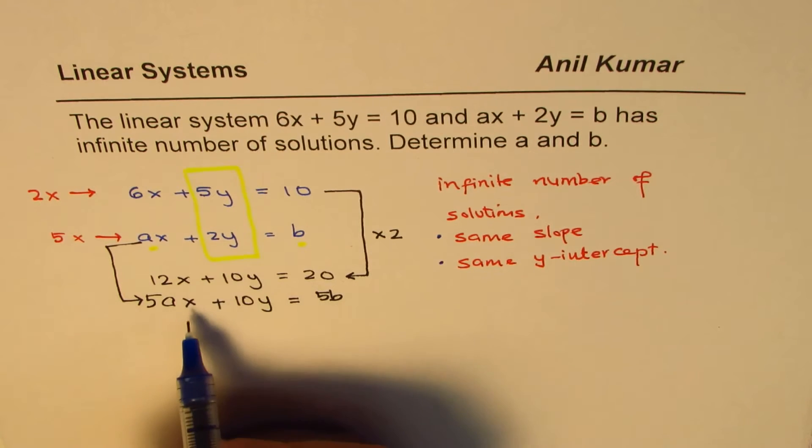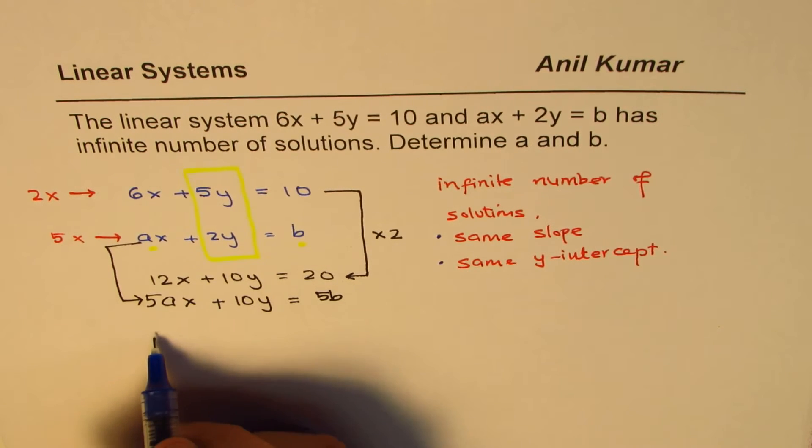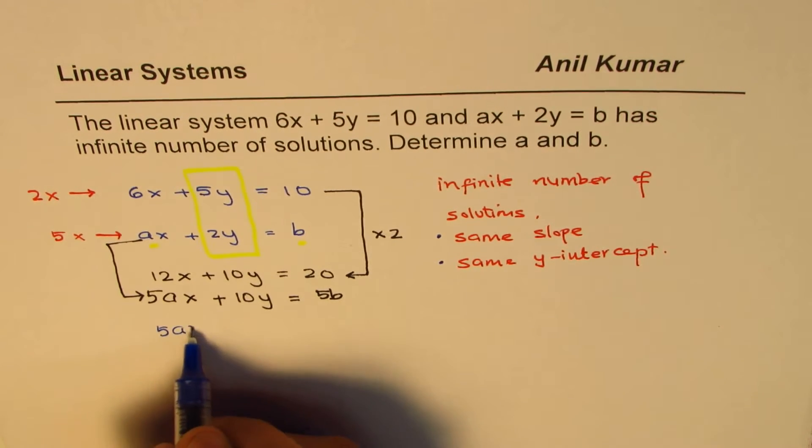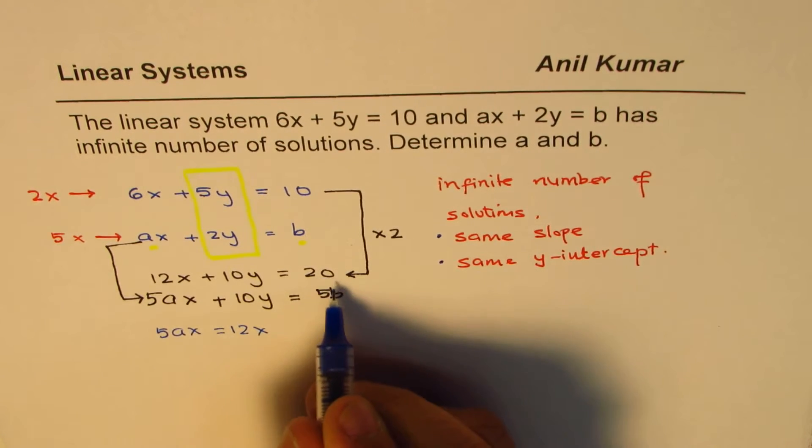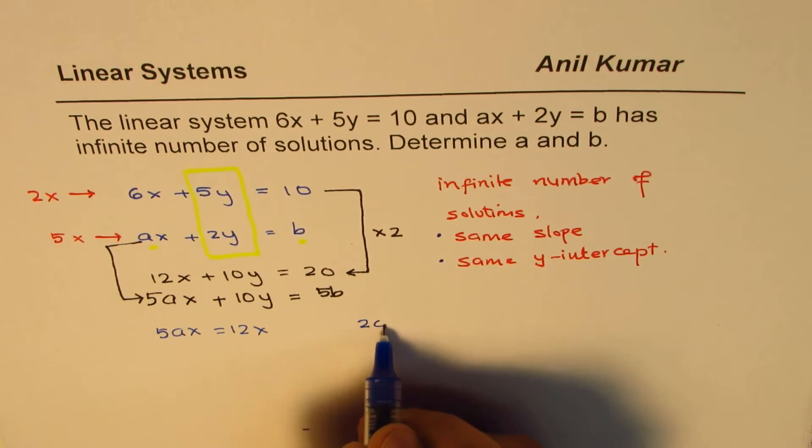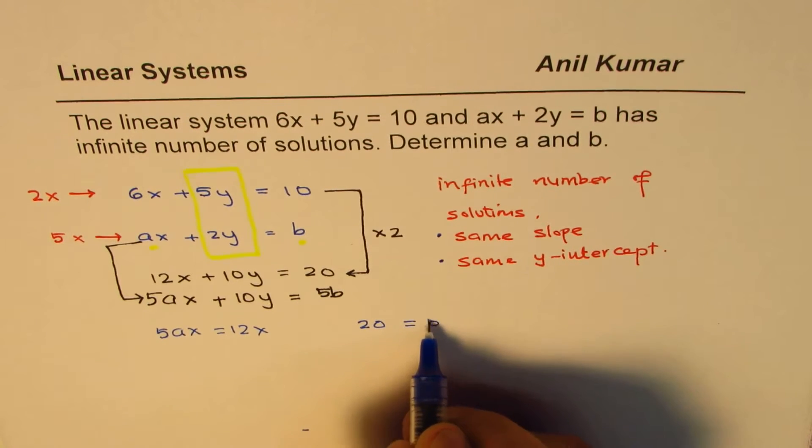So by comparing x values, we can say that five ax equals 12x and the constants, we can say 20 equals five b.